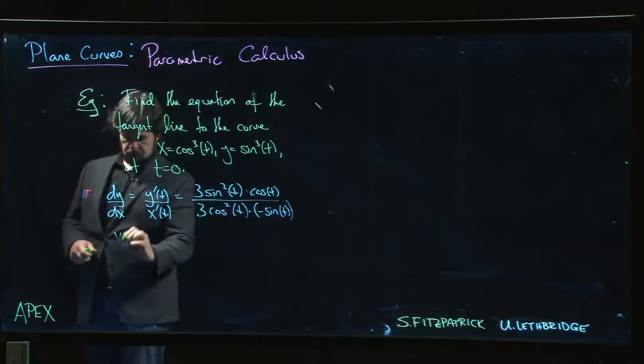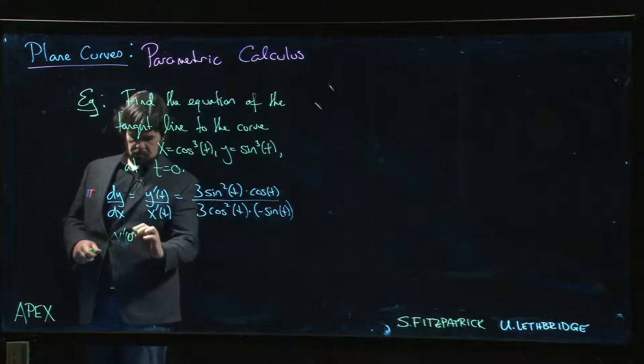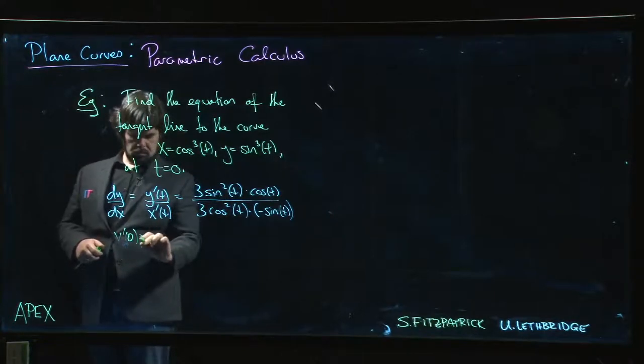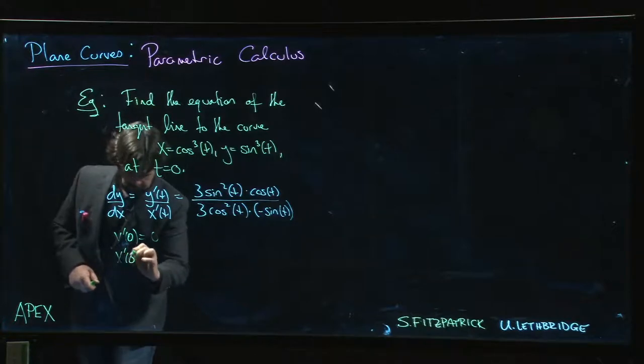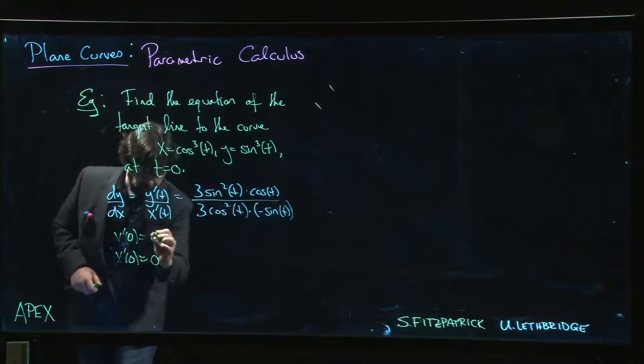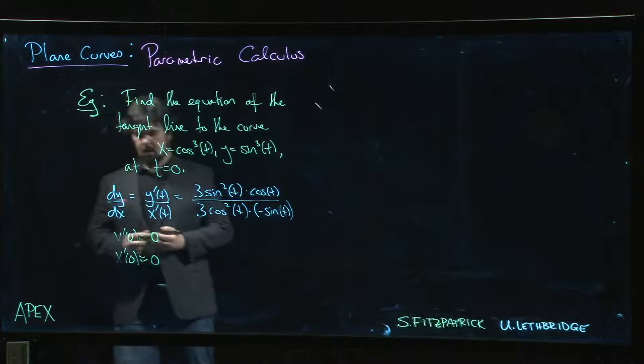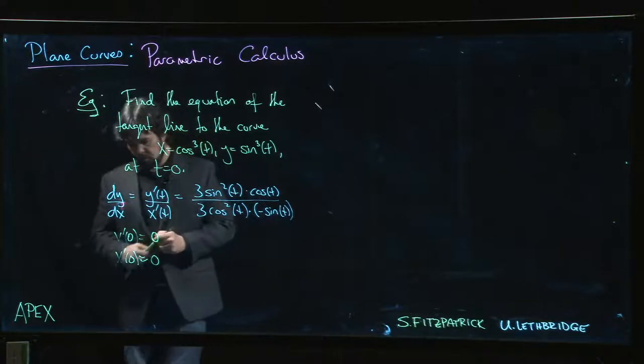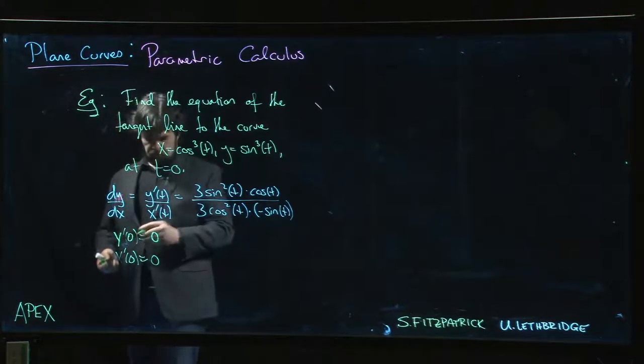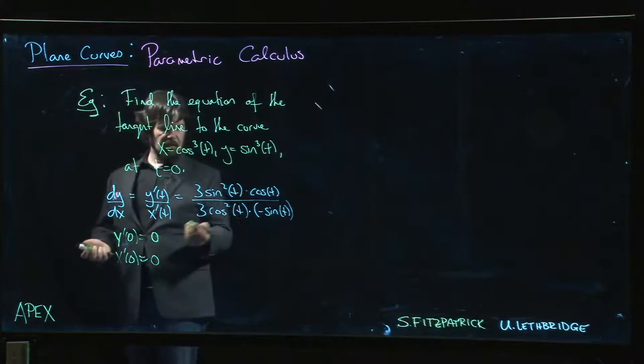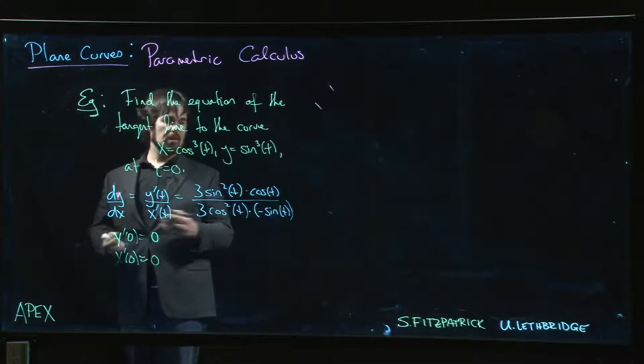Notice that y prime at zero is zero because sine of zero is zero. x prime of zero is also equal to zero. So direct substitution gives zero over zero. At this point you're really disappointed—dy/dx is not even defined.